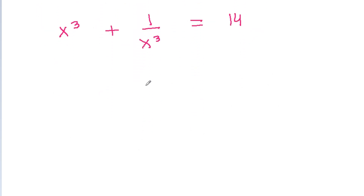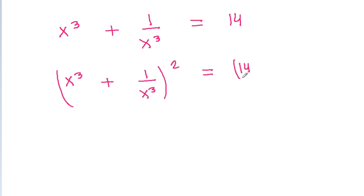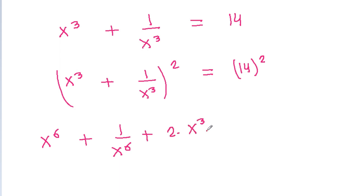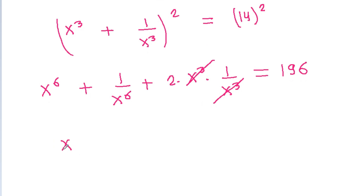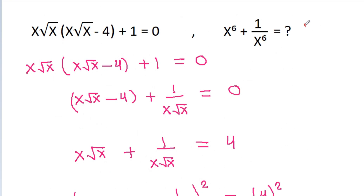If we square both sides again, then (x cube plus 1 by x cube) squared equals 14 squared, which is 196. Expanding, x power 6 plus 1 by x power 6 plus 2 times x cube times 1 by x cube equals 196, and the x cube terms cancel. So x power 6 plus 1 by x power 6 equals 196 minus 2, which is 194.